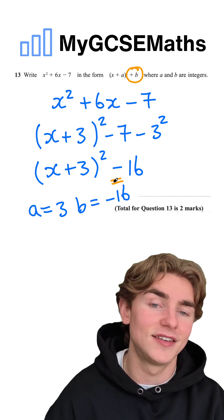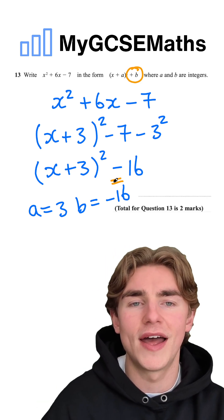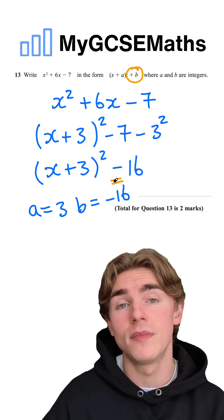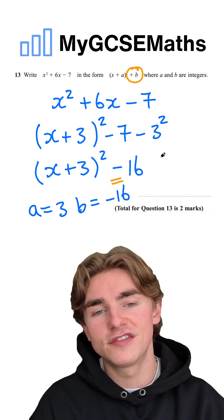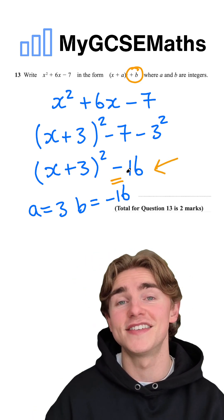Here it's technically adding a negative number, but really all we need to do is write our answer x plus 3 squared minus 16. It doesn't ask for the value of a and the value of b. I've just done that for clarity. So this would be our final answer here, x plus 3 squared minus 16.